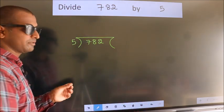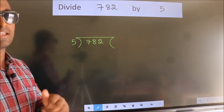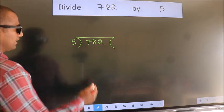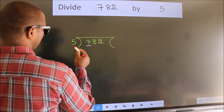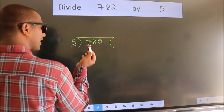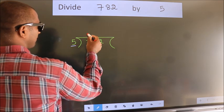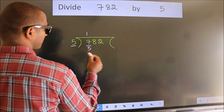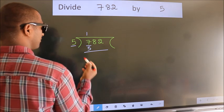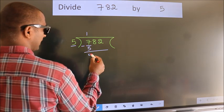This is step 1. Next, we have 7 here and 5 here. A number close to 7 in the 5 table is 5 once, which is 5. Now, we subtract and get 2.